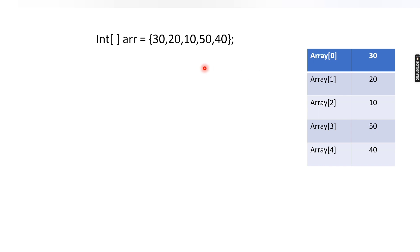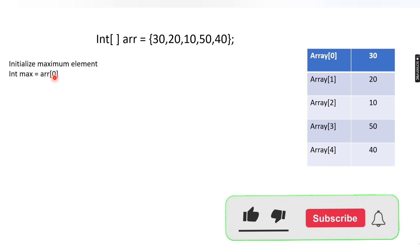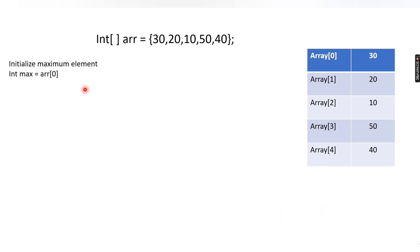Now we want to find out which is the largest element present inside this array. The first step is to initialize the maximum element. We will declare a variable: int max, and initialize it to the first position — so array of 0, which is 30. So max will have the value 30.